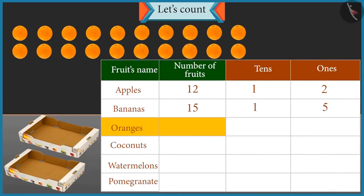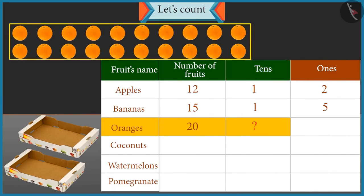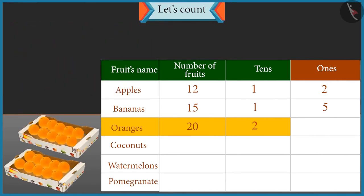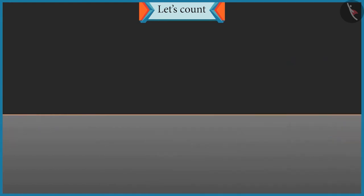Well done. Now tell me, how many tens are there in twenty? With twenty oranges, two groups of ten oranges will be formed, so there are two tens. And how many ones are there in twenty? There are no oranges left, so the number of ones is zero. Well done Chotu.